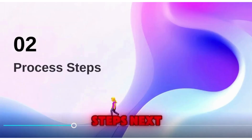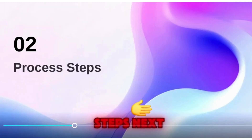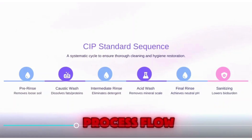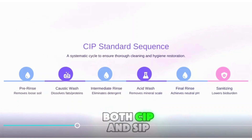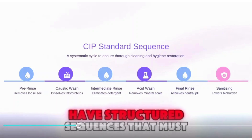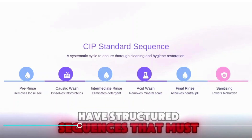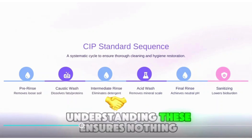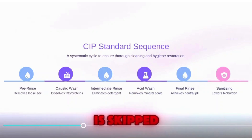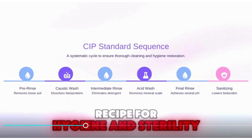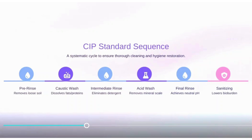Process Steps. Next, let's break down the process flow. Both CIP and SIP have structured sequences that must be followed. Understanding these ensures nothing is skipped — it's like following a recipe for hygiene and sterility.